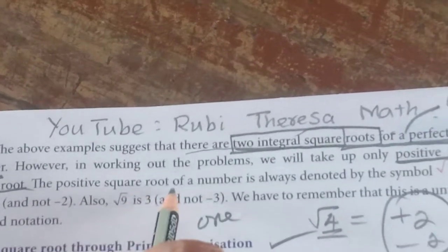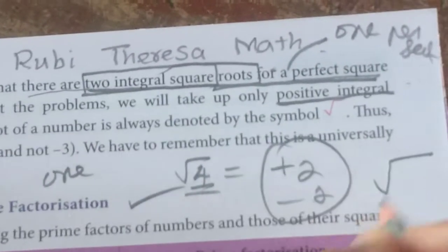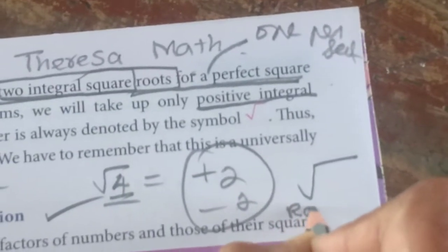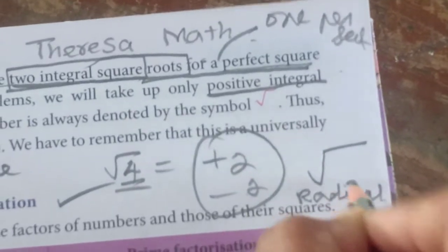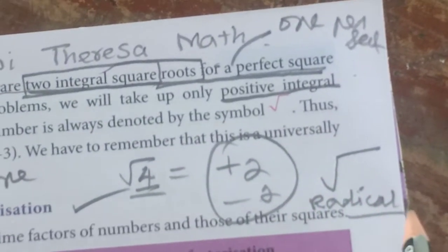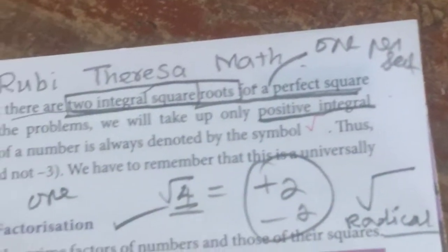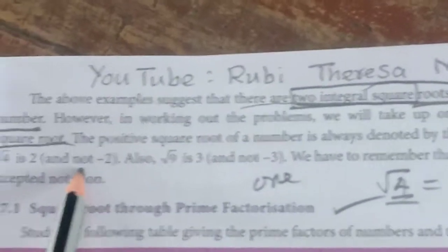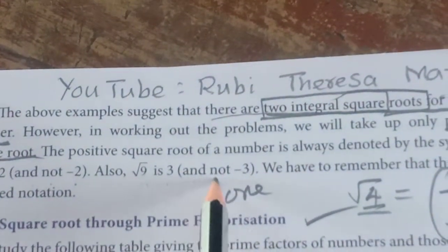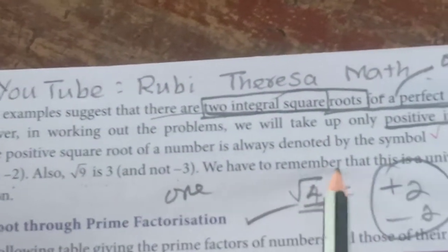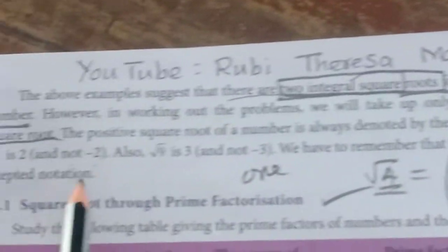The positive square root of a number is denoted by a symbol. That symbol is called a radical — the radical symbol. Thus, root 4 is 2 and not minus 2. Also, root 9 is 3 and not minus 3. We have to remember that this is a universally accepted notation.